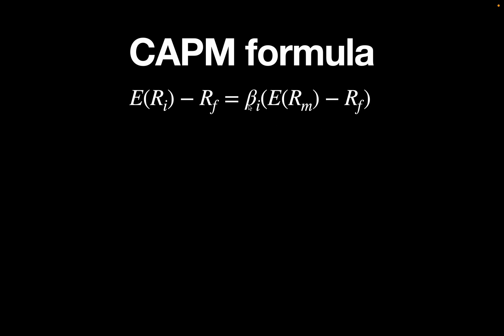So what is this beta? The beta is the covariance of the assets return and market return divided by the variance of the market return.